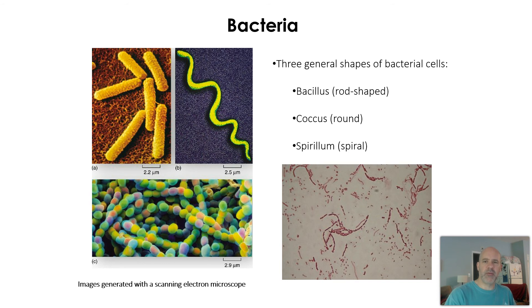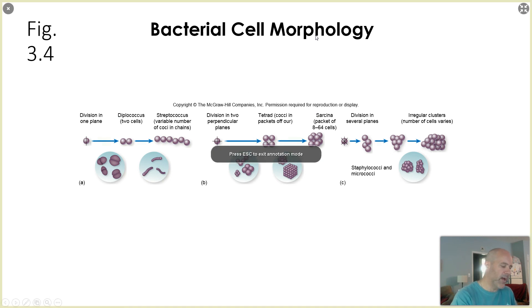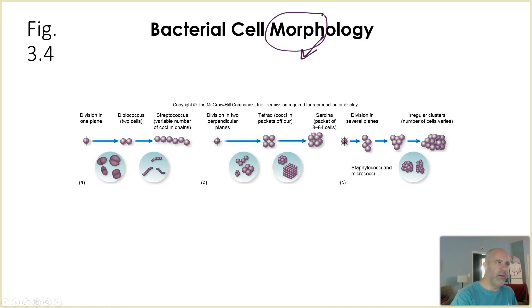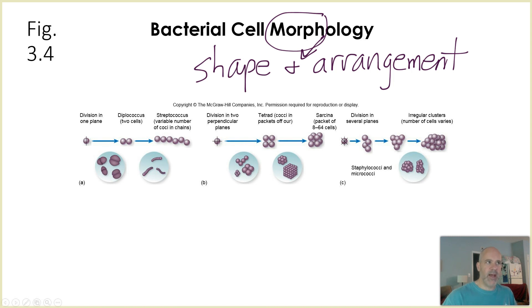Sometimes bacteria can live together in chains or clusters. Going over what we call bacterial cell morphology — morph refers to structure — so cell morphology is the shape and also the arrangement. When we're talking about bacterial cell morphology, it's shape: is it a bacillus, a coccus, a spirillum? Arrangement means do the cells stay together in a particular pattern as they divide? All bacteria have some kind of shape, but not all bacteria have an arrangement. Some bacteria divide in just one plane, so as they keep creating more cells, all of the cells stay attached with each other in one direction, tending to form pairs — that's called a diplo arrangement. A diplo of round shaped cells can be called diplococcus.